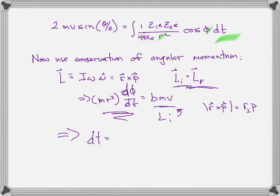Now, we can solve for dt in order to put that into the integral, and dt is equal to MR squared d phi over BMV. And the m's cancel, and we plug that now into the integral.